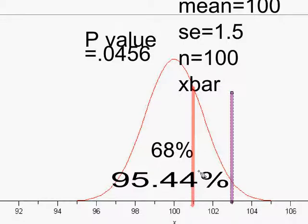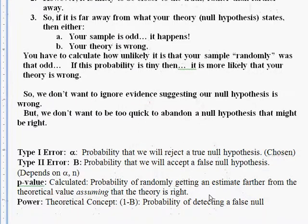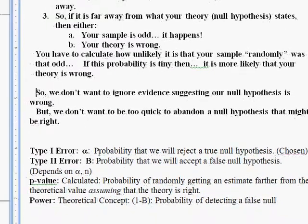So these kinds of errors happen all the time. Sometimes you don't reject a null hypothesis when you should and sometimes you reject a null hypothesis when you should not. It's just the life of a statistician.